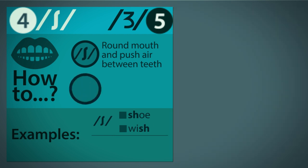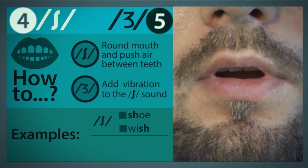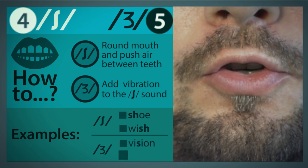To make the ZH phoneme, simply add voice from your vocal cords to the SH sound. We see this sound in many English words such as vision and measure.